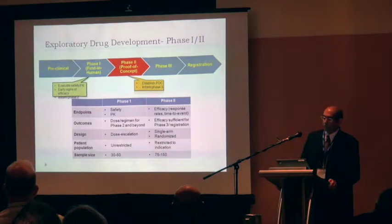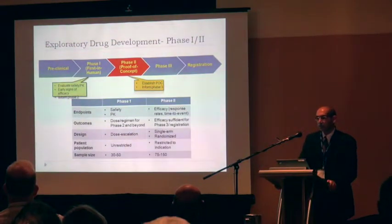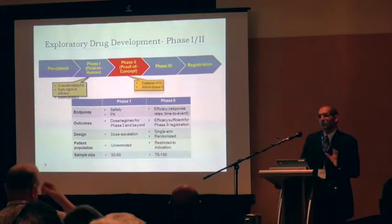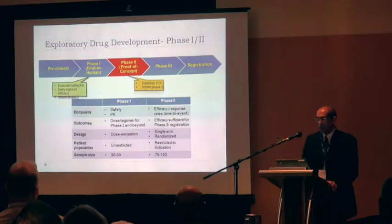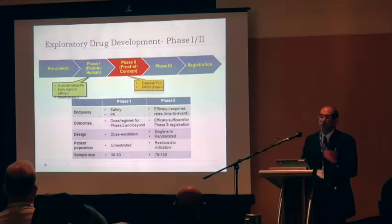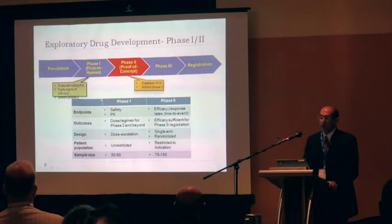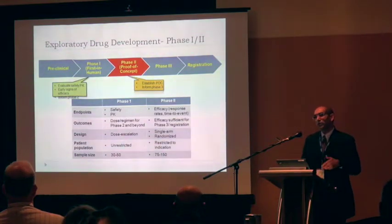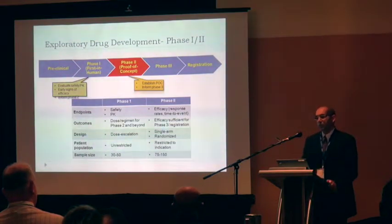This is an overview of the entire drug development pathway from preclinical through registration. What I'm going to be focusing on today is proof of concept, which in oncology typically happens during phase two. Phase one in oncology is primarily about safety — you're trying to establish safety and tolerability — and sometimes we look at different regimens to try to get to either a biologically active dose or an MTD.